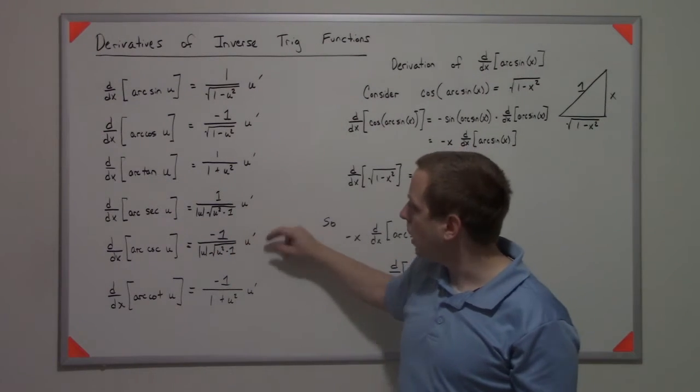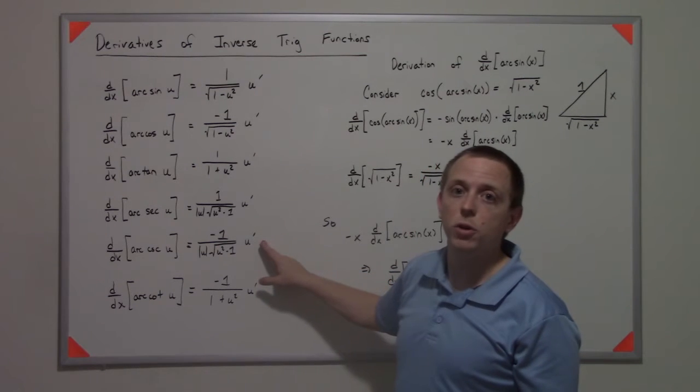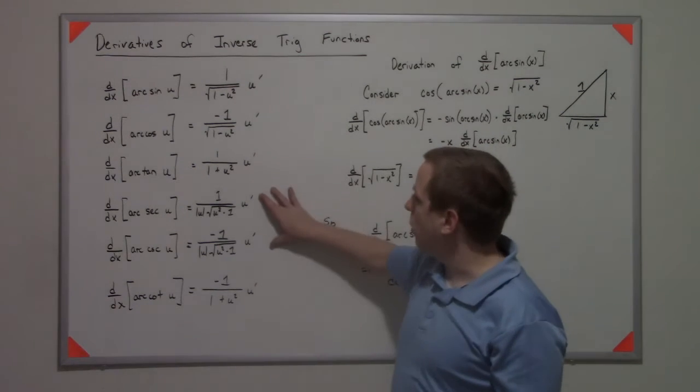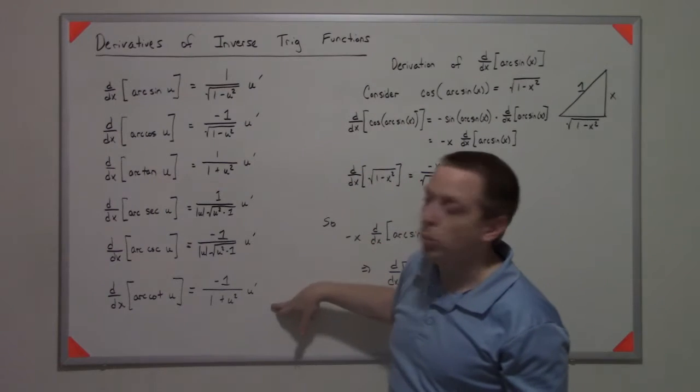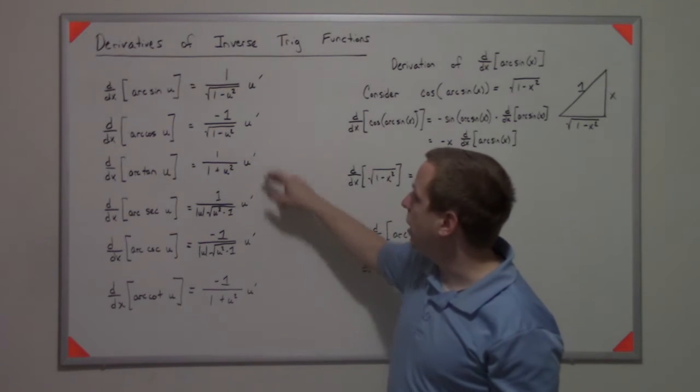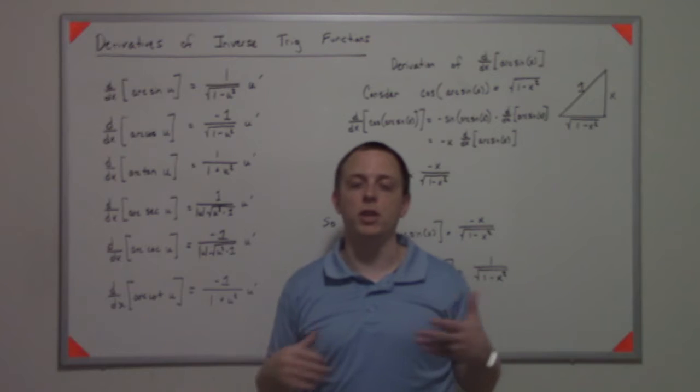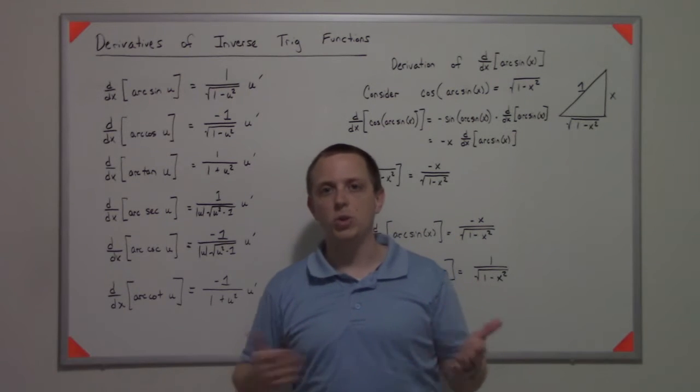The arc cosecant is the negative version there. So what you really have are three separate formulas with negative versions based upon whether you're dealing with sine or cosine.